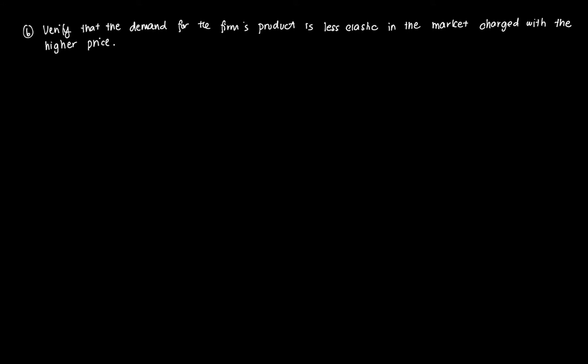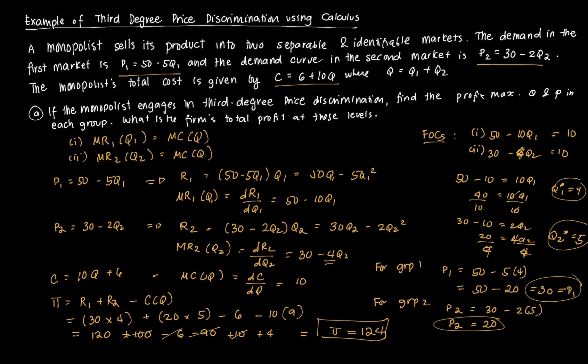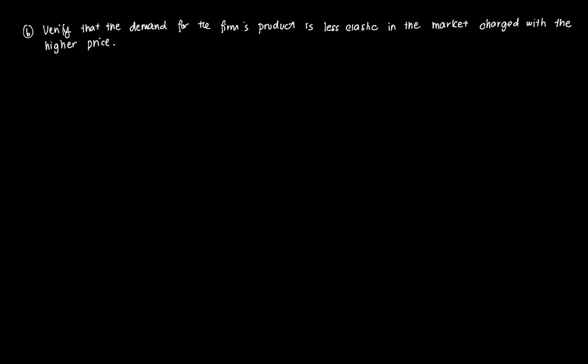Next, we need to verify that demand is less elastic in the market charged the higher price. Since P1 is higher than P2, we need to prove that the price elasticity of market one is lower than the elasticity of market two. Price elasticity is equal to negative of the partial of quantity with respect to Pi, times Pi over Qi.